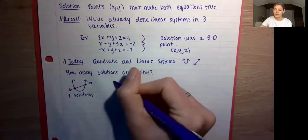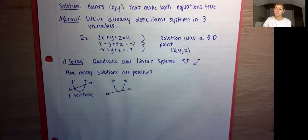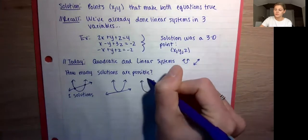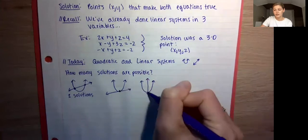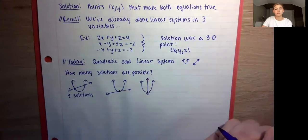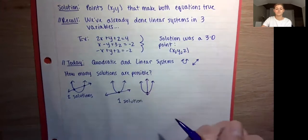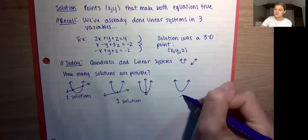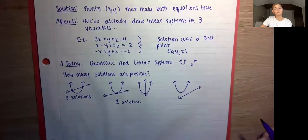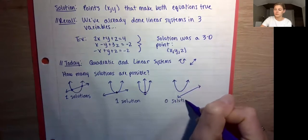What about something like this — or something like this? How many solutions do these both have? If you're thinking one, you're correct. One right there and one right there. So this is what one solution looks like. In our last scenario, what if we have something like this? Do they intersect at all? They don't. So this is where we have zero solutions.